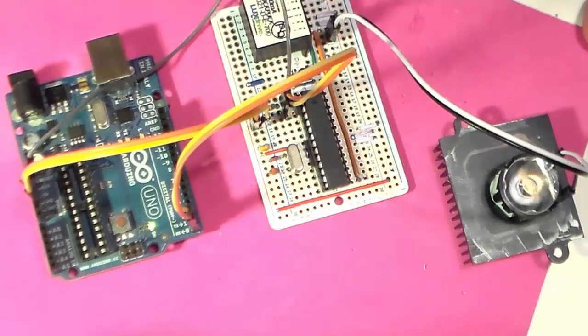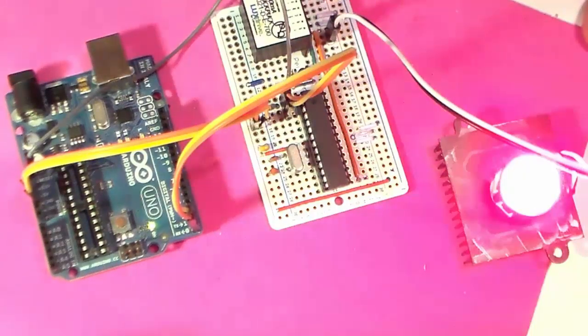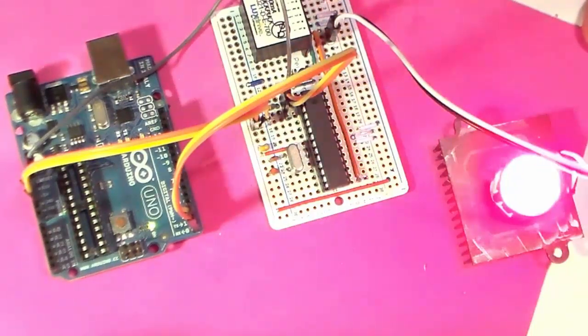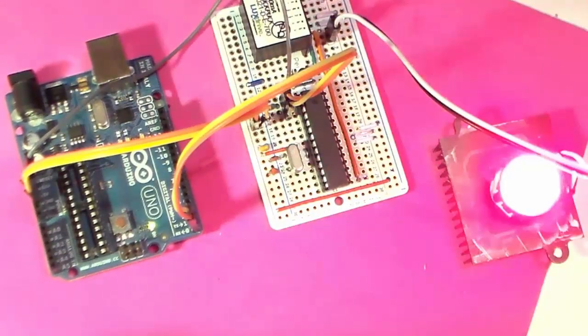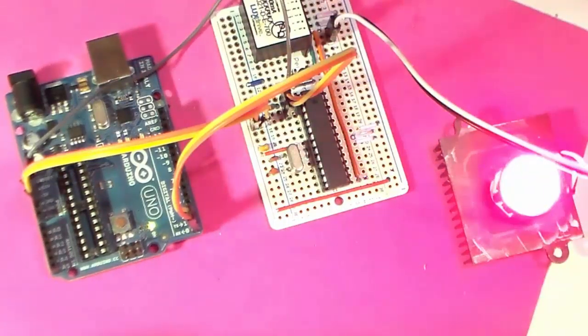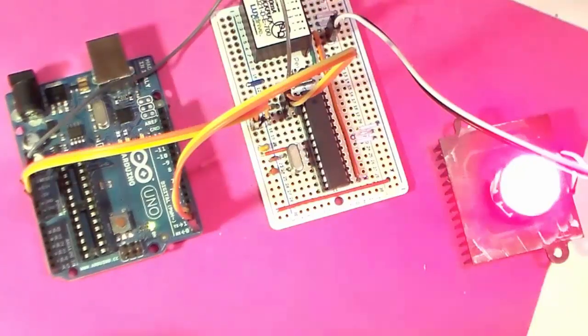Look at that. That was five blinks, not three. And now that was seven or eight blinks. And now it's just blinking and blinking and blinking. How can this be?